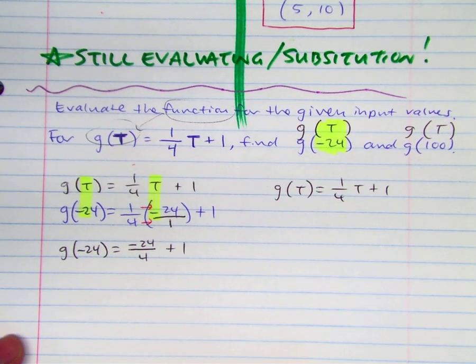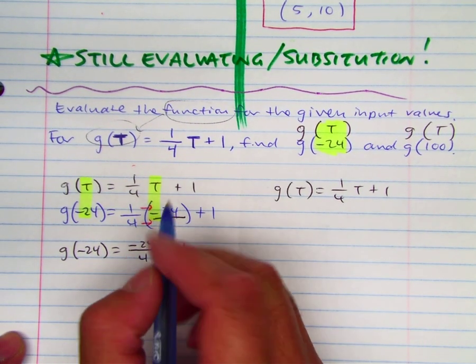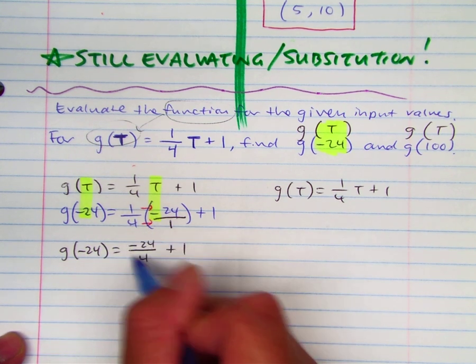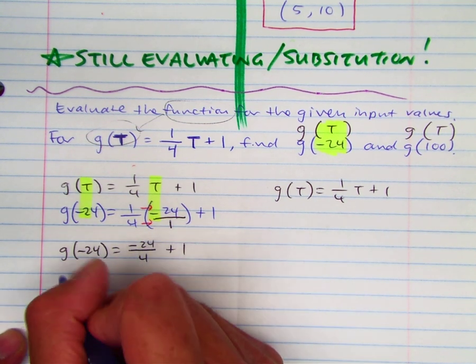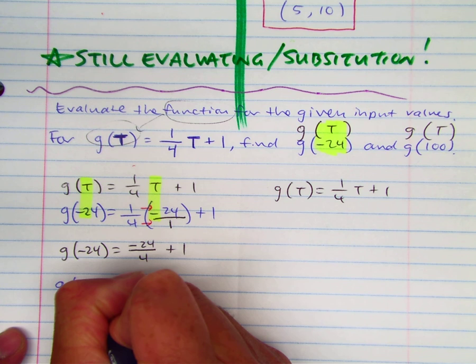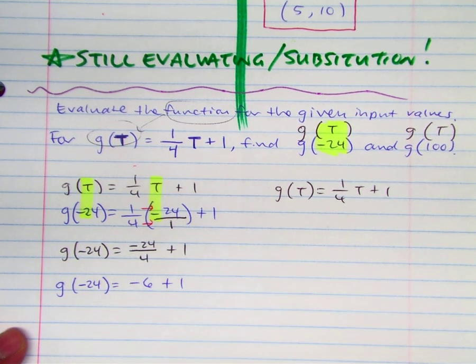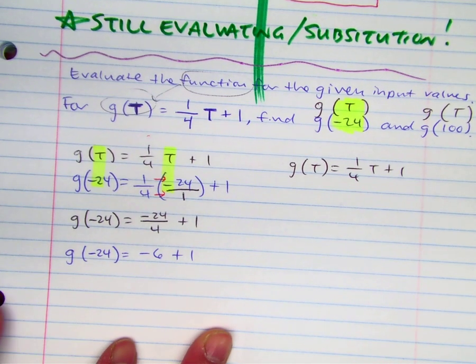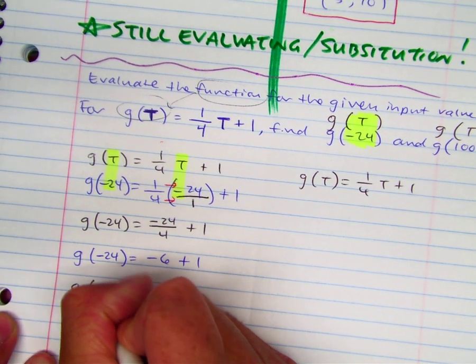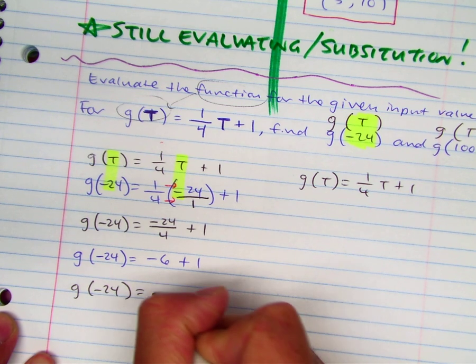And then here, we're just going to follow our order of operations, right? We did multiplication going left to right, and now it's division. So negative twenty-four divided by four is negative six plus one, which is negative five.